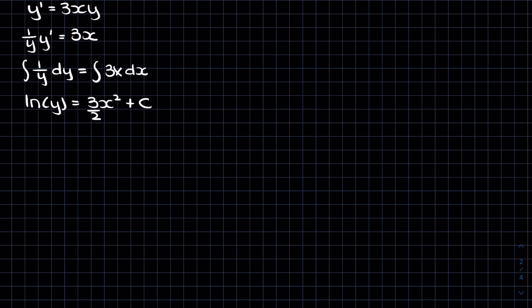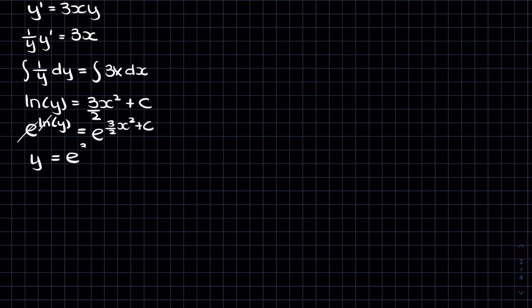Now we need to get y on its own, so we can use the exponential function. If we say e to the natural logarithm of y equals e to the (3/2)x² plus c, then these cancel and we're left with y equals e to the (3/2)x². The plus c is the same thing as e to the c, and this can also be written as c1 times e to the (3/2)x², because e to the c is still just some constant so we can rename it c1.